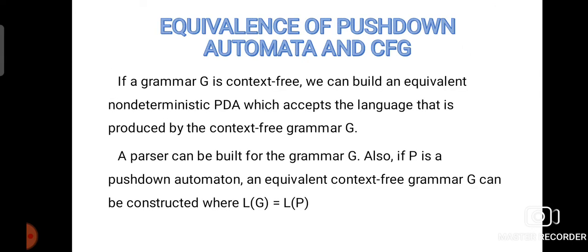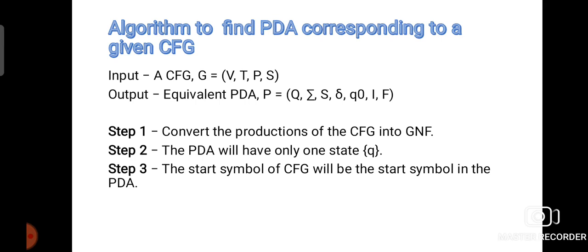Now, equivalence of pushdown automata and CFG. If a grammar G is context-free, we can build an equivalent non-deterministic pushdown automata which accepts the language produced by the context-free grammar. We can develop a pushdown automata for the given context-free grammar, where L(G) equals L(P) — that is, if the language of the grammar is the same as the language of the pushdown automata.